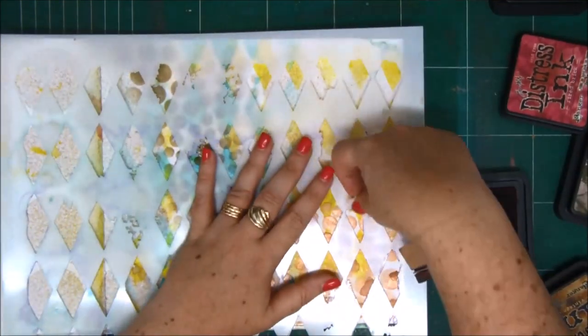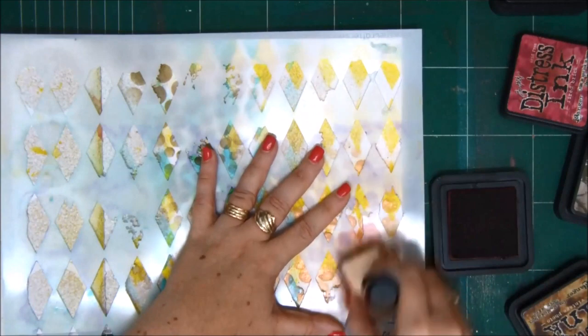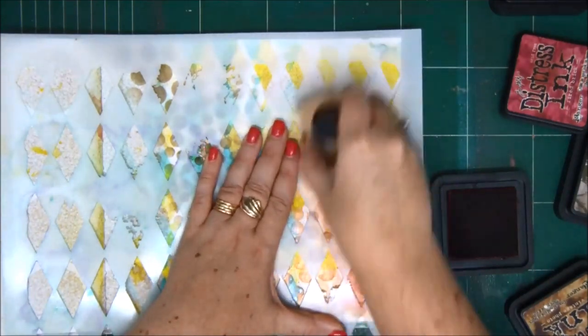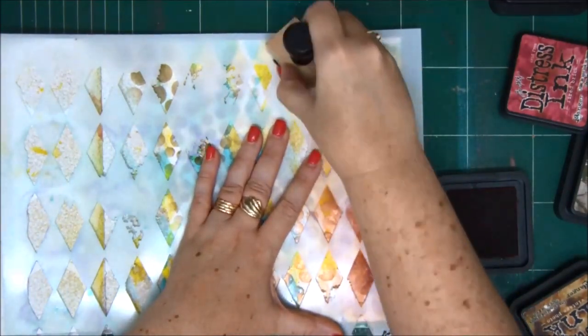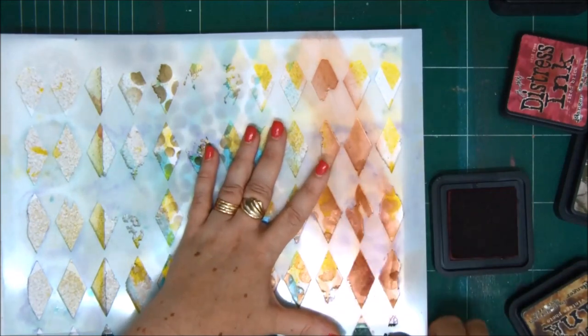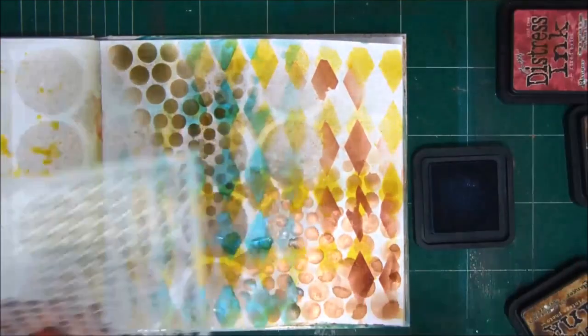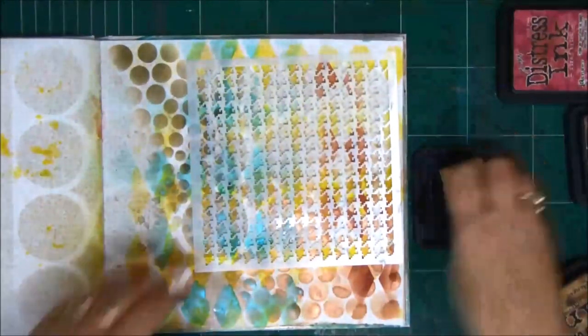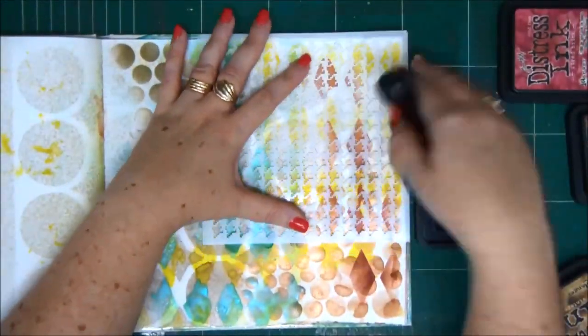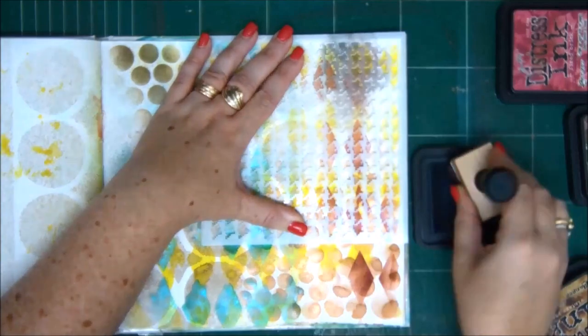Layer number six, diamonds again with a new color. This time it's going to be dark red. And you see how I'm building the layers. We already have six layers. Now layer number seven. Again a new stencil and a new color.